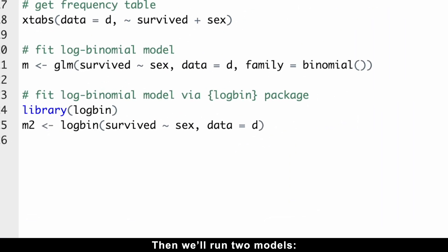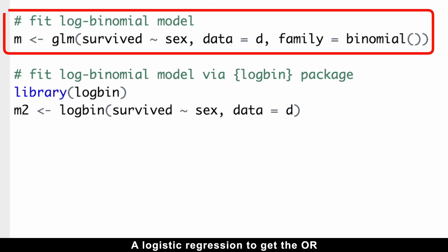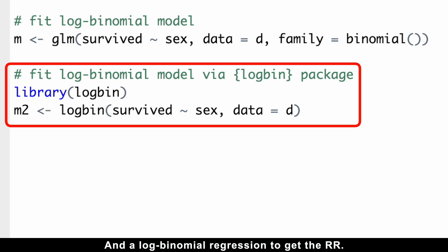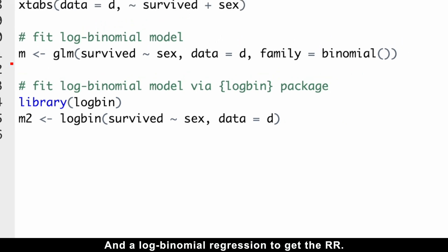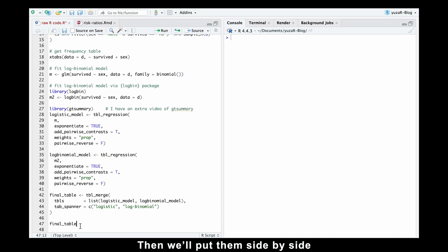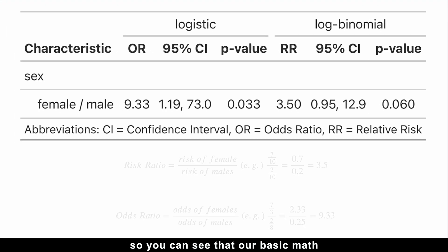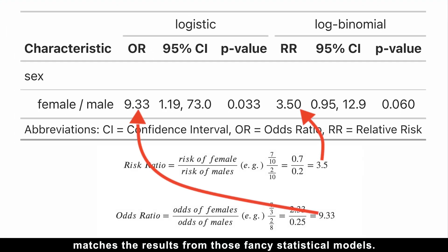Then we'll run two models, a logistic regression to get the odds ratios, and a log-binomial regression to get the risk ratios. Then we'll put them side by side, so that you can see that our basic math matches the results from those fancy statistical models.